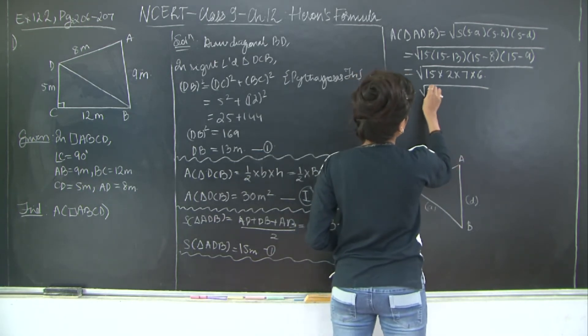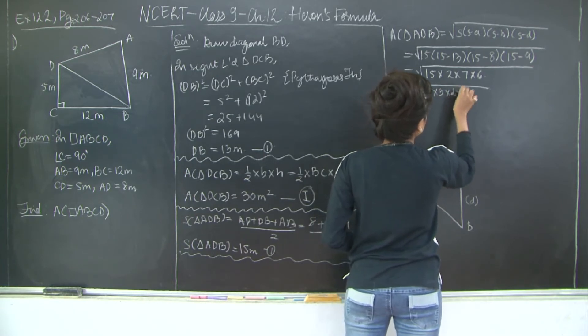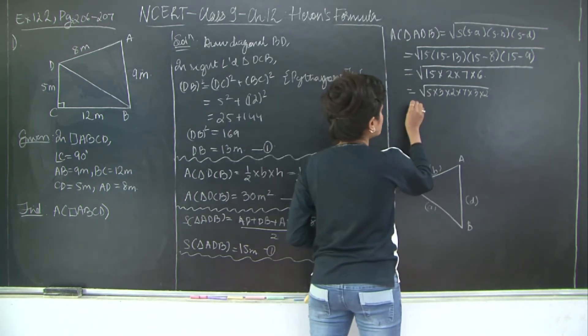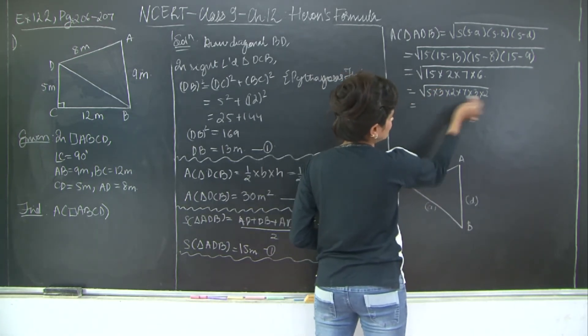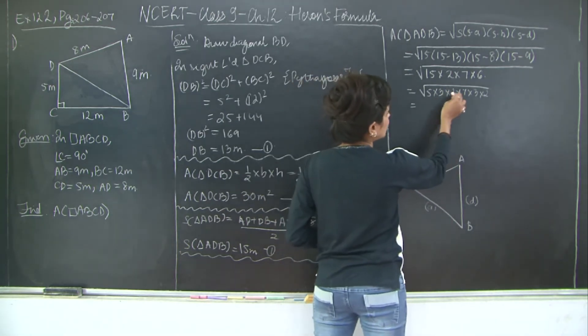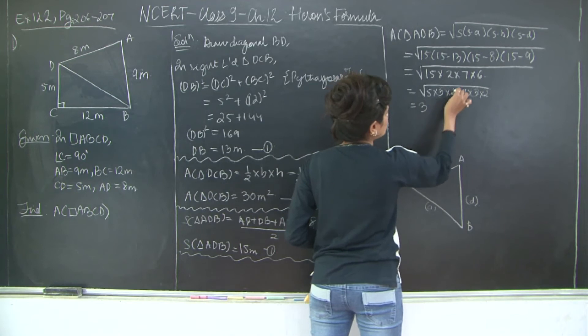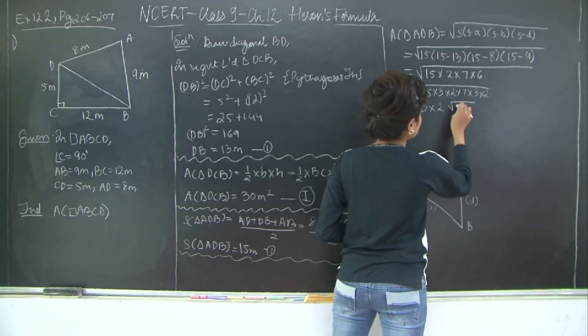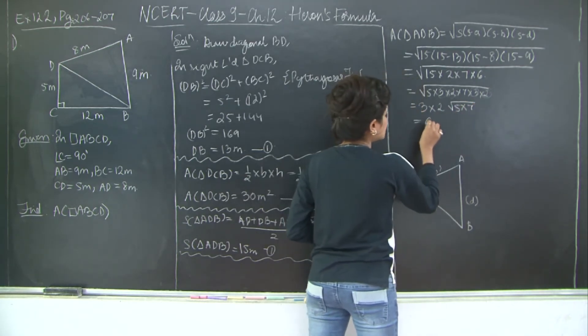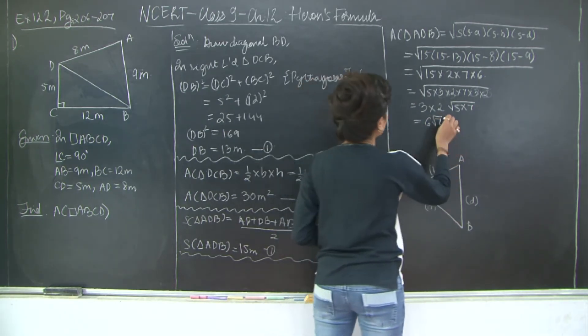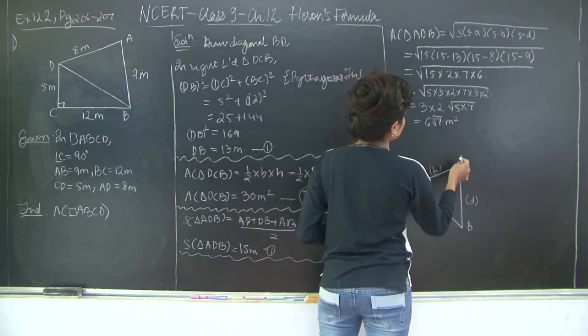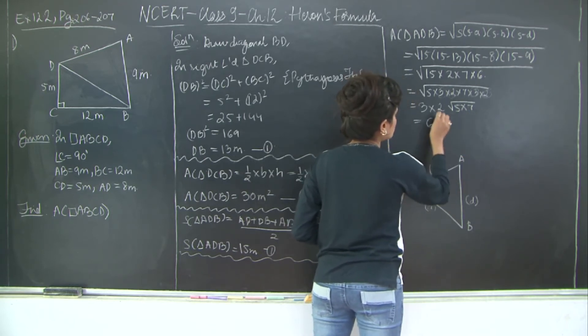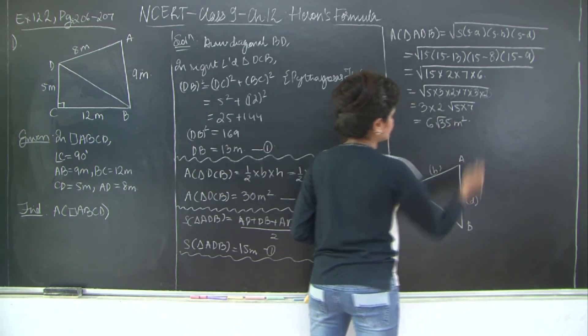Let's go ahead and find the square root. This can be written as 5 × 3 × 2 × 7 × 3 × 2. So you have a single 5 here, so we cannot find the square root. Then you have 3 and 3, so 3 comes out. You have 2 and 2, so 2 comes out. Again 7 is all by itself. So we will write within the square root 5 × 7. So this would be 6√35 meter square.